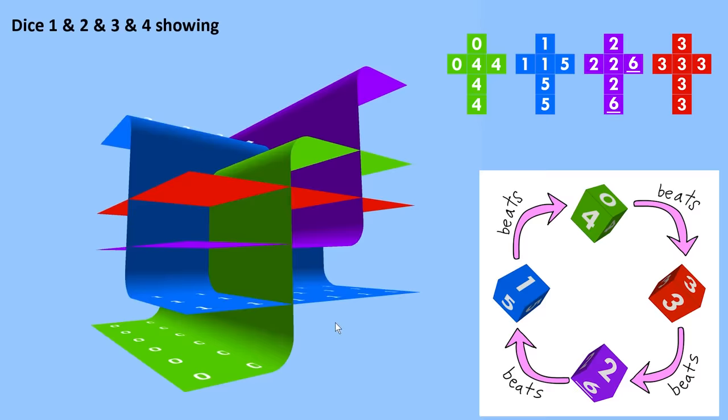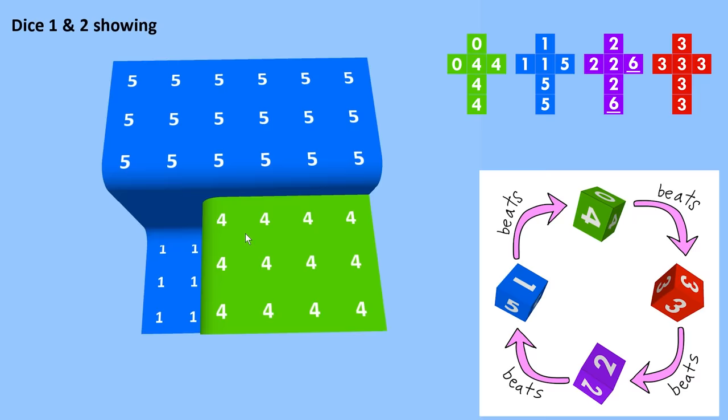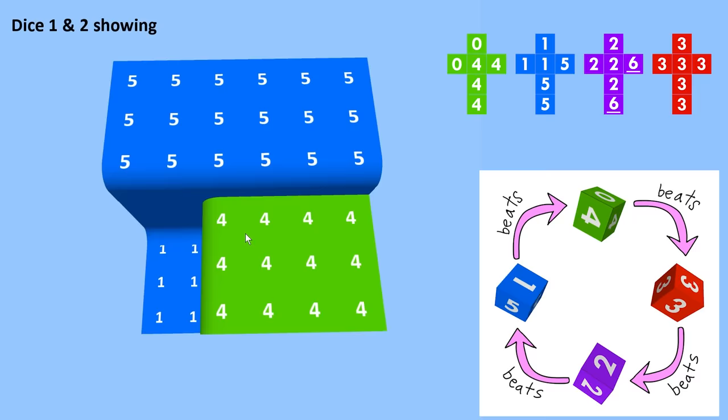So there you go, that's pretty much it. In summary, the green die beats the red die, beats the purple die, beats the blue die, which finally beats the green die, completing the cycle. I hope you enjoyed my visualization of these non-transitive dice. I've been Kerry Huang, and I will see you later.